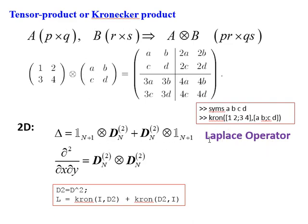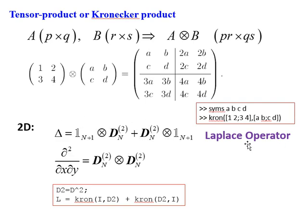We can use this utility to construct the 2D Laplace operator. This is the identity matrix of size (N+1) by (N+1) tensor product with DN squared — where DN is the Chebyshev differentiation matrix to the power 2 — plus DN squared tensor product with the identity matrix of size (N+1). By this operation we can get the 2D Laplace operator.